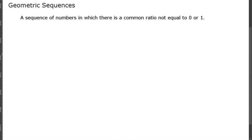In this video I'm going to go over geometric sequences. A geometric sequence is a sequence of numbers in which there is a common ratio that's not equal to 0 or equal to 1. This is different than an arithmetic sequence, because in an arithmetic sequence there is a common difference.